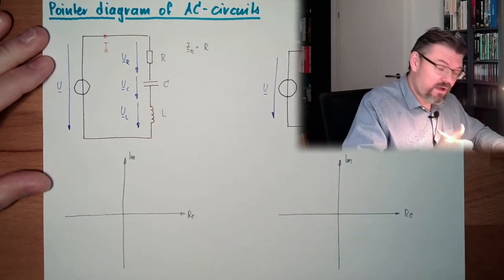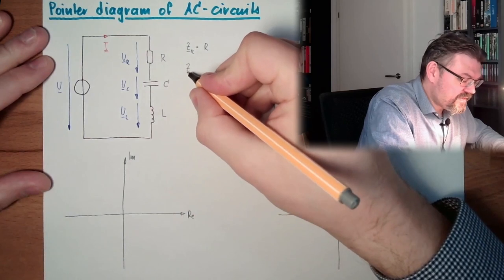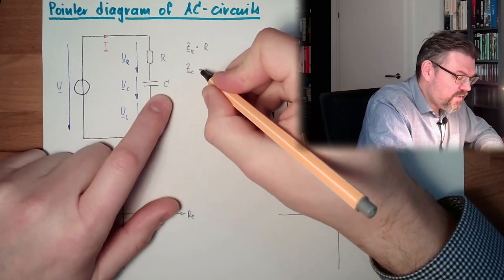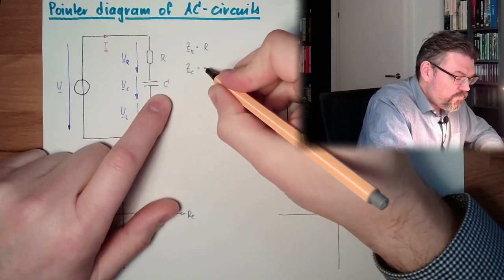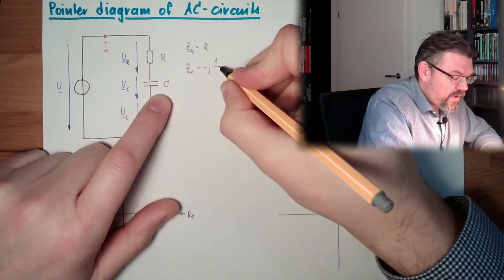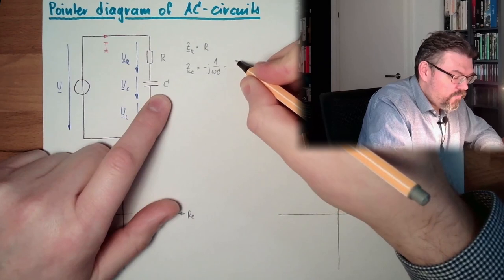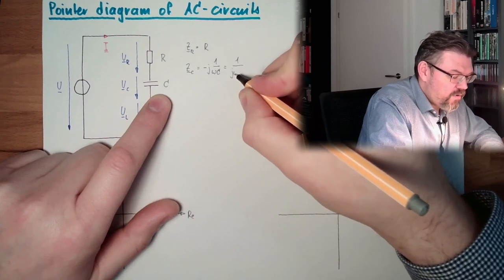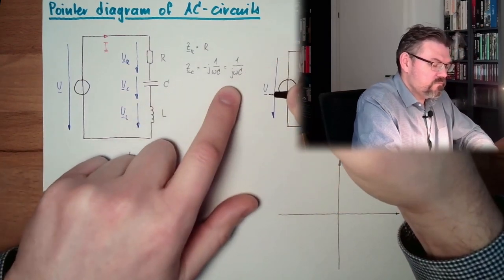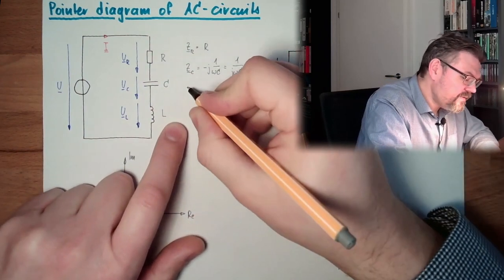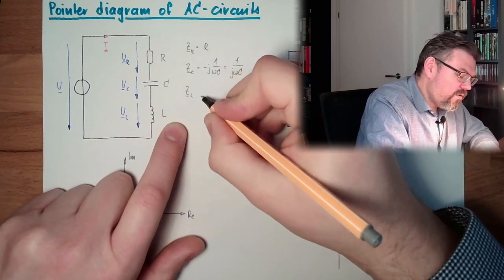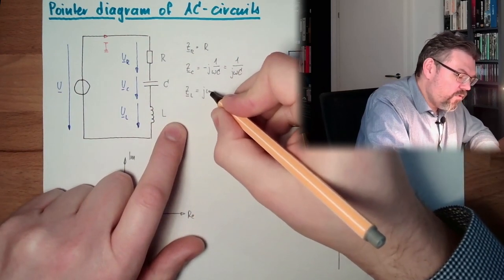Then the resistance of a capacitor was minus J divided by omega C, or 1 divided by J omega C. And the impedance of a coil was J omega L.